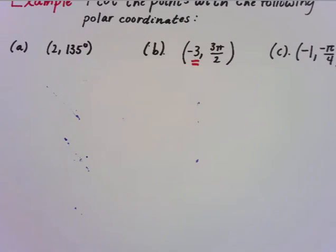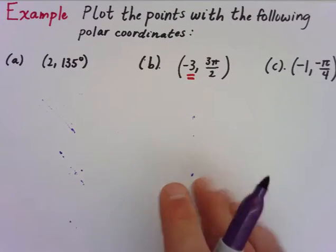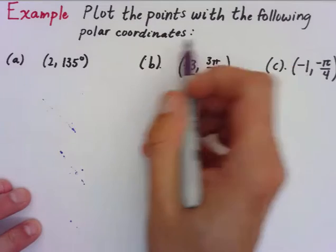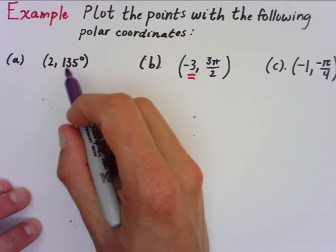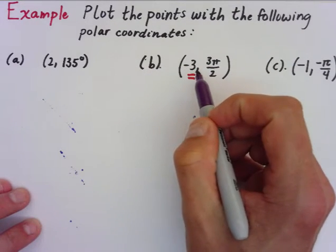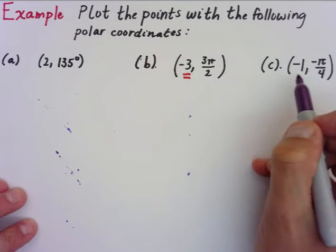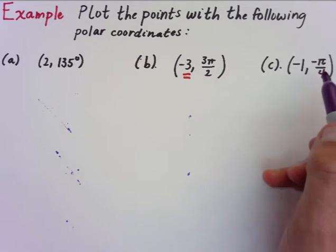So I've got three new examples for you, and we're going to be plotting the points with the following polar coordinates: 2, 135°; b is -3 and 3π/2; and c is -1, π/4.